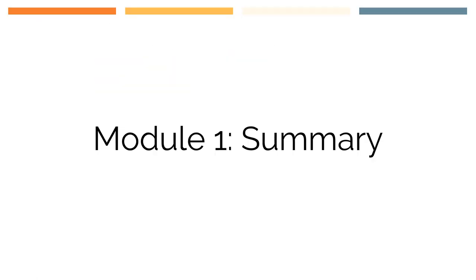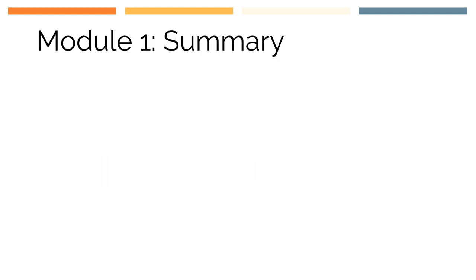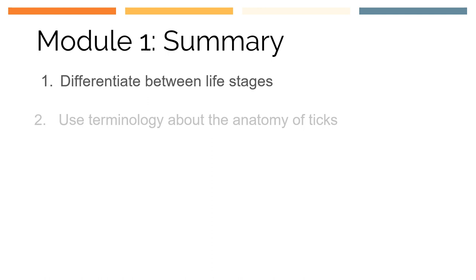You have reached the end of Module 1. In this module, you have learned about the anatomy of ticks and how to differentiate between tick life stages. By this point, you should be able to recognize and use terminology related to tick anatomy. This should allow you to differentiate between life stages of different species, as well as use that terminology about the anatomy of ticks to help identify tick species.